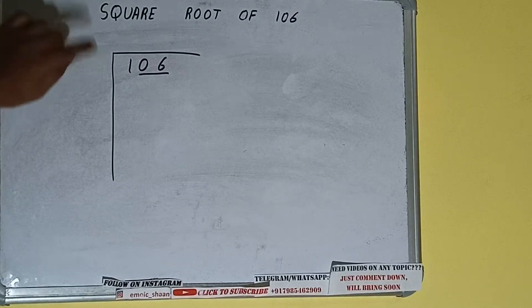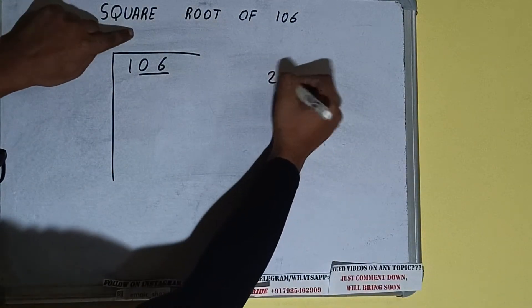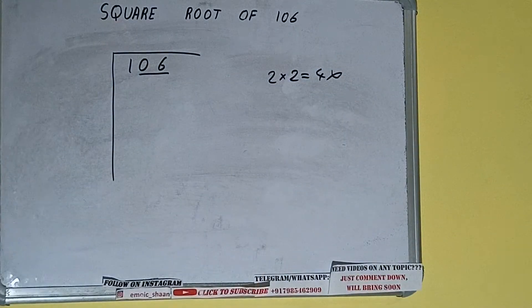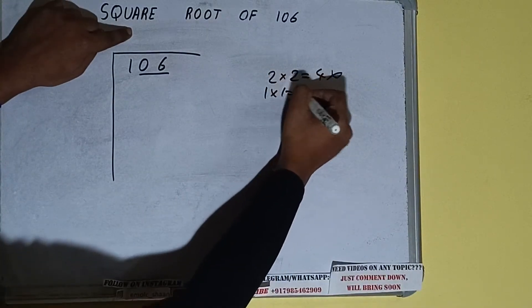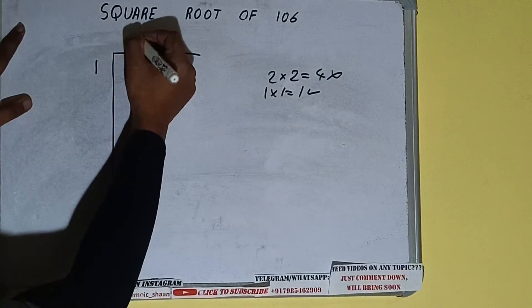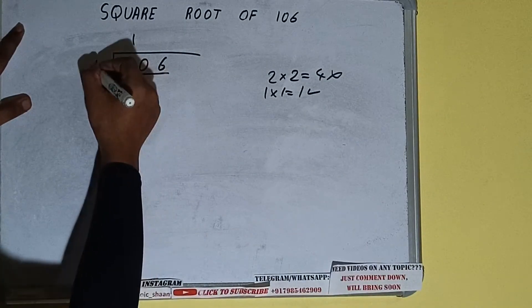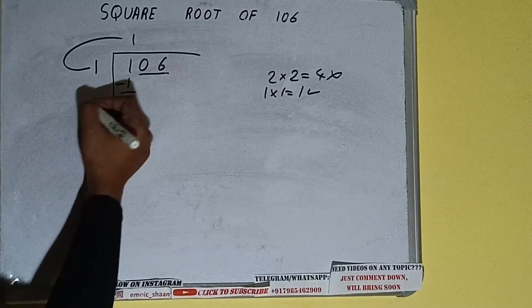Whatever number we write on top, we have to write beside the divisor as well. If we write 2 here and 2 here, it will be 4, which is greater than 1, so we cannot take it. If we write 1 here and 1 here, it will be 1, which works. So 1 minus 1 leaves 0. We did 1 into 1, then add both: 1 plus 1 equals 2. Write it here with one extra digit.